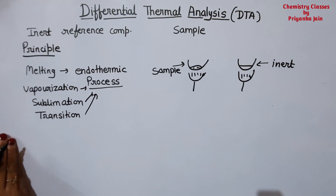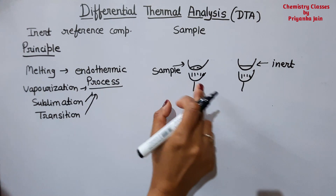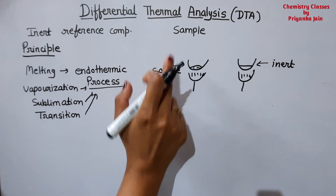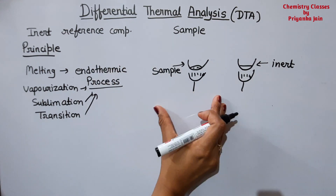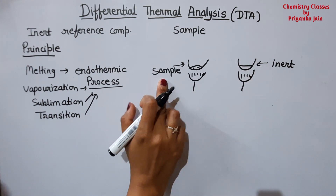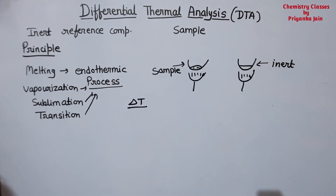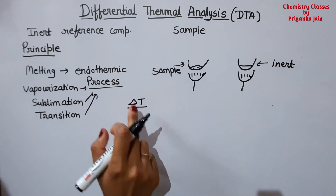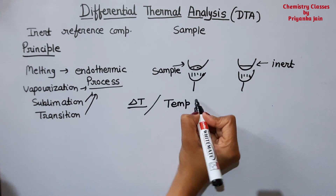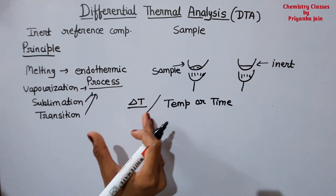In all these endothermic processes there is absorption of energy. When the substance is absorbing energy, its temperature will decrease. So we get a temperature difference ΔT between the sample and the reference, and we plot this temperature difference against temperature or time. This is the basic principle of DTA.